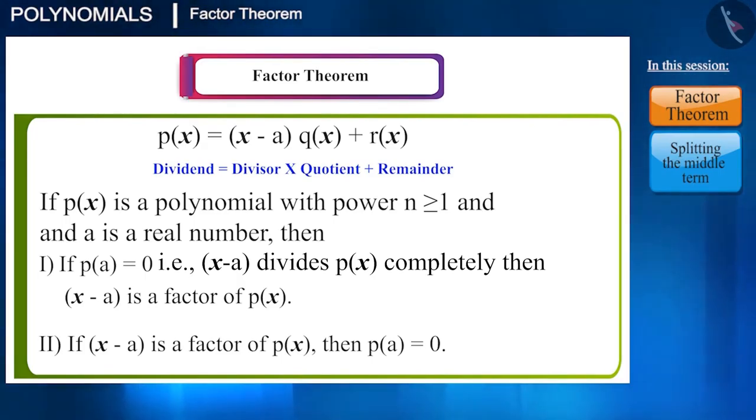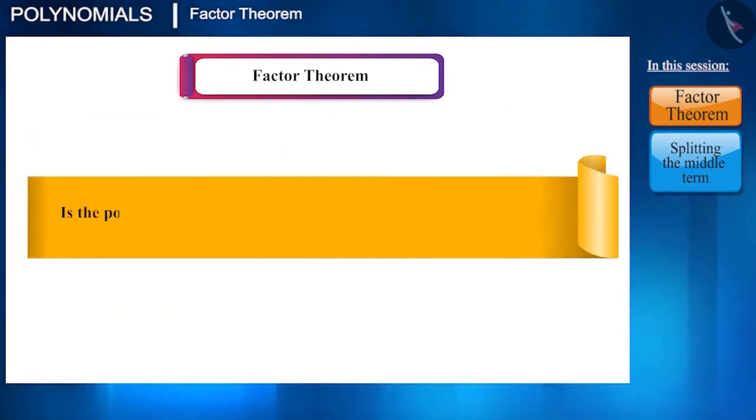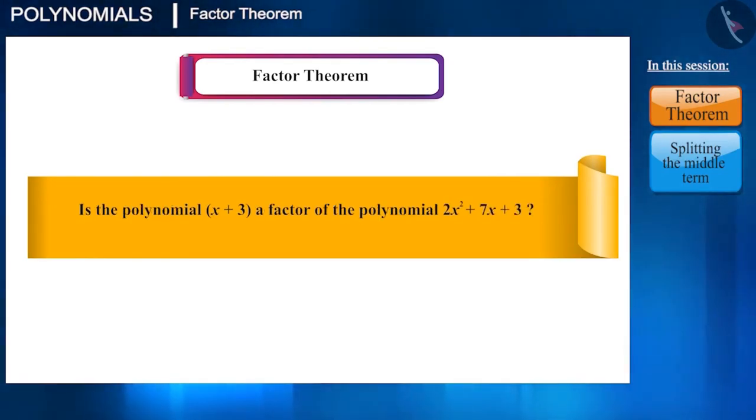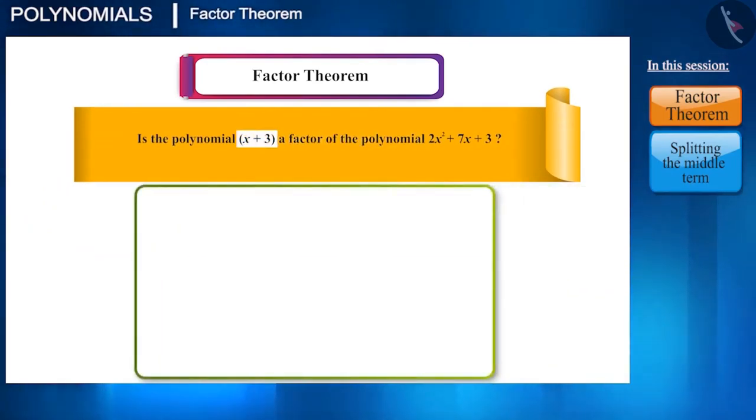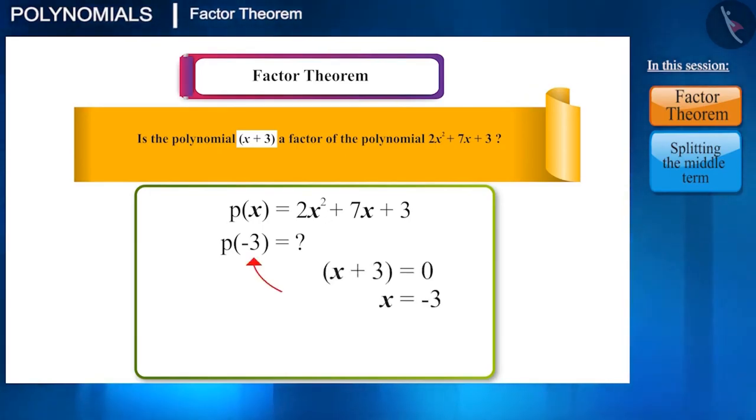Let's see an example related to this theorem. Check whether x plus 3 is a factor of the polynomial 2x² plus 7x plus 3 or not. According to the factor theorem, if x plus 3 is a factor of the polynomial 2x² plus 7x plus 3, then p(minus 3) should be 0, where minus 3 is obtained by equating x plus 3 to 0.